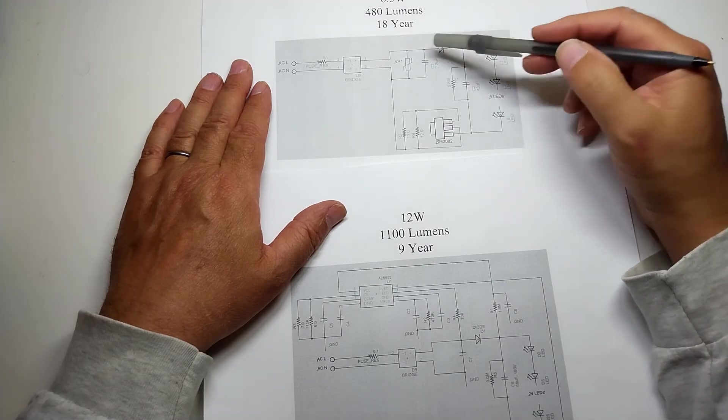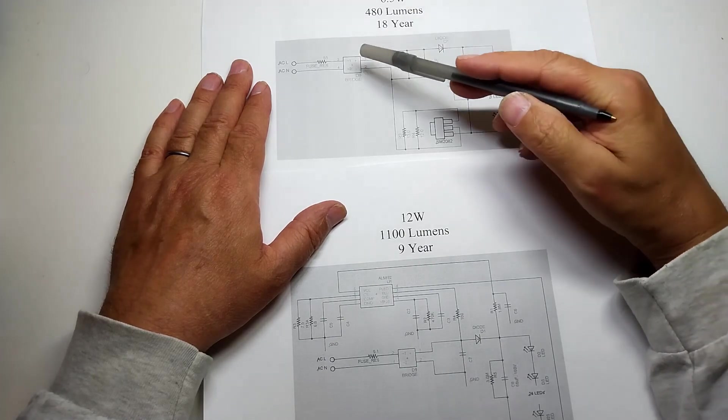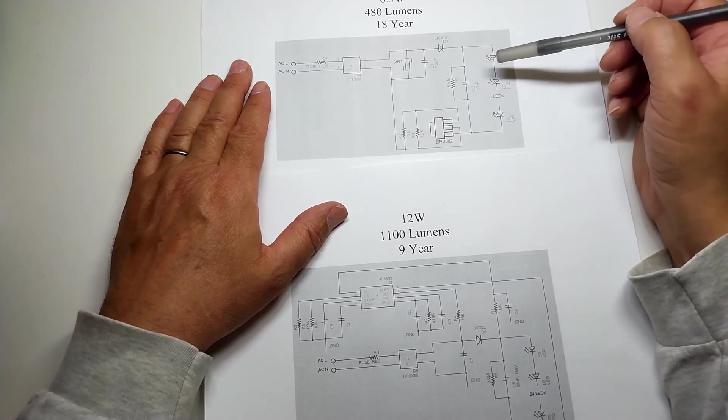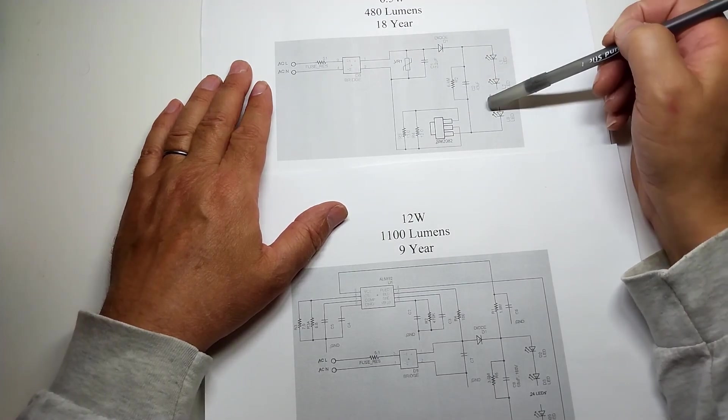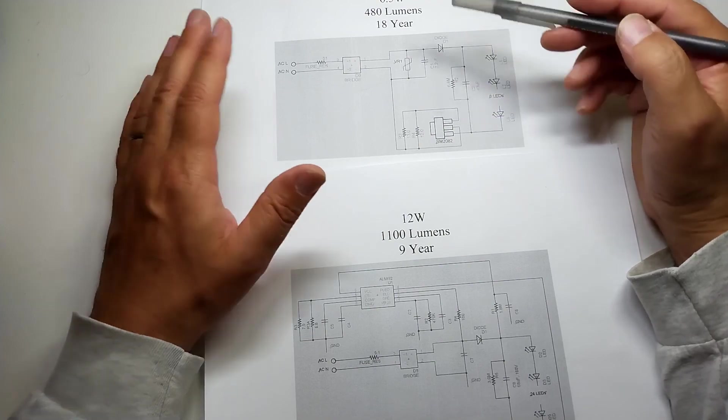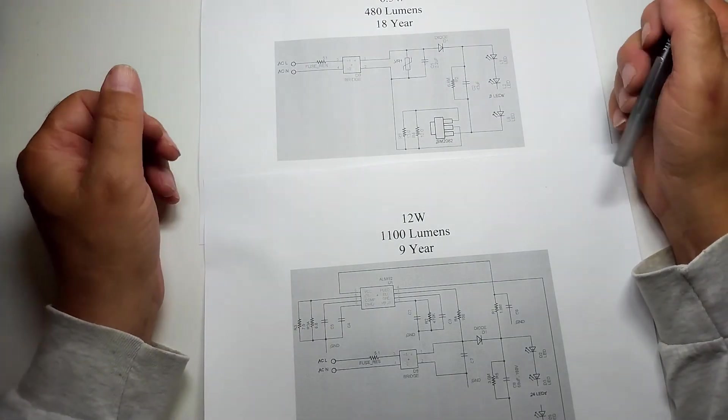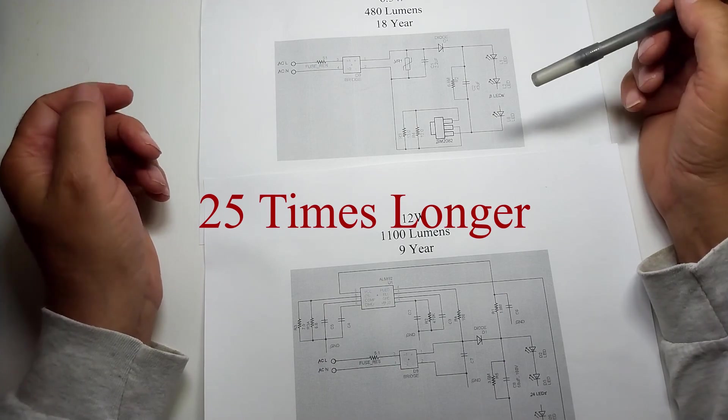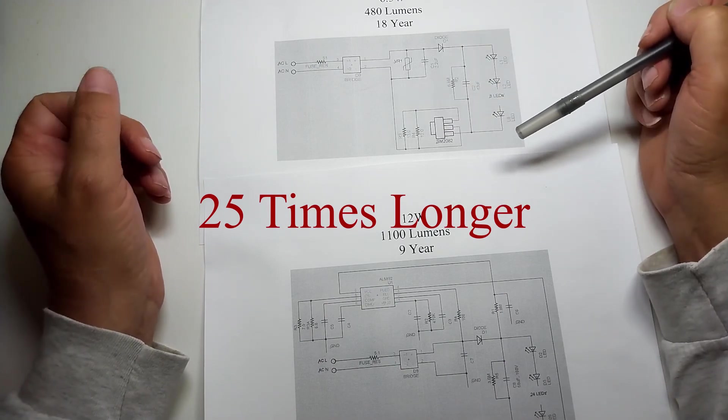They have double caps for the filtering and double up on a lot of the parts to improve reliability. And because of the low temperature and the heat in the part, basically it lasts 25 years longer than a normal light bulb.